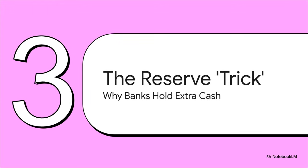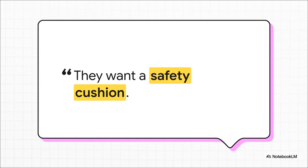Let's dig into this trick, because it's not just a random detail for a test question — it's what banks do in the real world. But why would a bank voluntarily lock up money it could be lending out and making a profit on? It really comes down to one thing: a safety cushion. Think of it like a bank's own personal emergency fund — extra cash on hand for a rainy day, maybe a sudden rush of withdrawals or an economic downturn. It's a strategic choice they make for stability, not just a rule they have to follow.